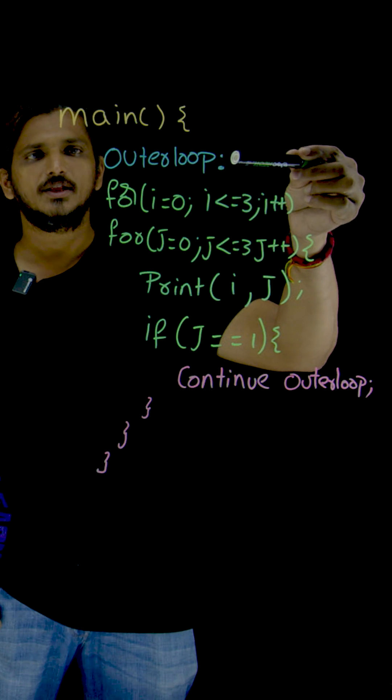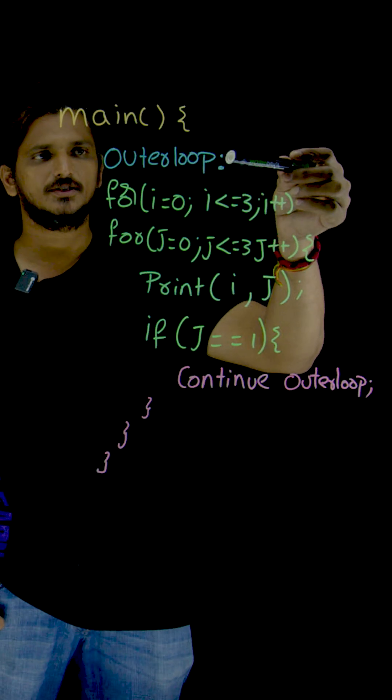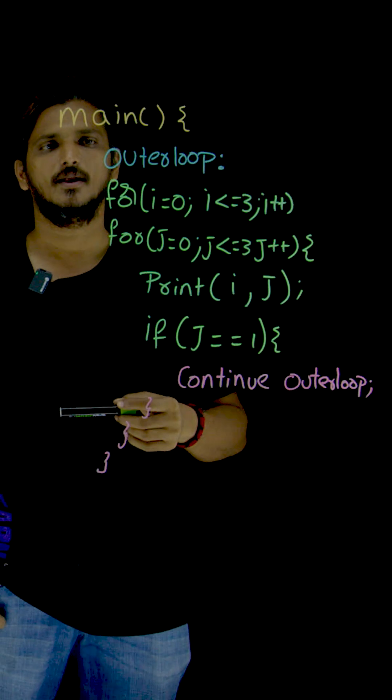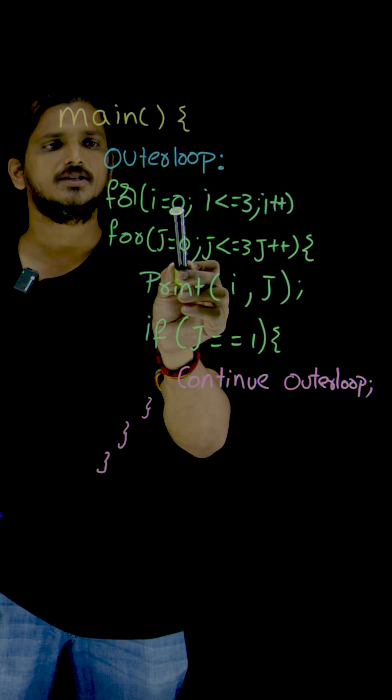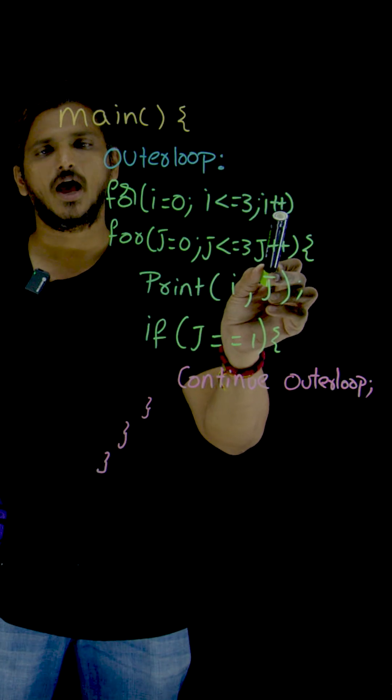So we have mentioned a label in the program. Inside the program we have mentioned a label. Now we are having for i is equal to 0, i less than or equal to 3, i plus plus.